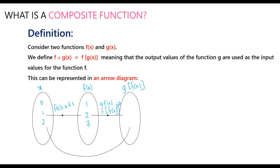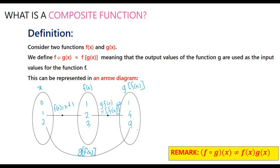Then we substitute this f(x) into g(x). Let g(x) = x², so we get g(f(x)) values of 1, 4, and 9. From set x to the last set, we write this as g(f(x)). Please note that f composite g is not equal to f(x) times g(x).